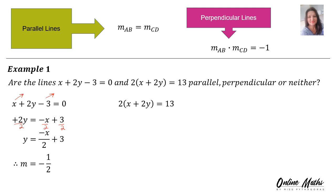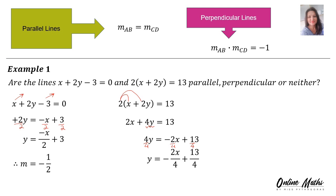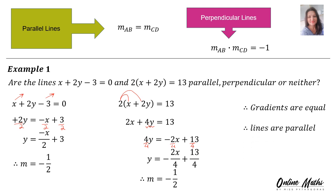The other line: 2(x + 2y) = 13. We multiply in the 2 to get rid of the brackets, then write in standard form — y alone on the left. The 2x walks across becoming negative 2x, we divide through by 4, giving y = negative 2x over 4 plus 13 over 4. Its gradient is also minus a half. The two gradients are equal, therefore the lines are parallel.